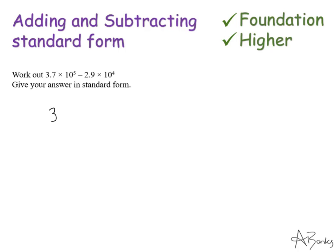So I have 3.7 times 10 to the 5. I haven't altered this at all. That's just staying as it is. And here, if I'm changing this into times 10 to the 5, I have raised my power by 1. I've multiplied this by 10. Then I have to divide this by 10 in order to keep it the same number. So that's 0.29 times 10 to the 5.